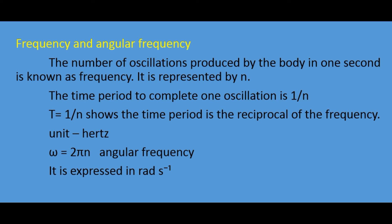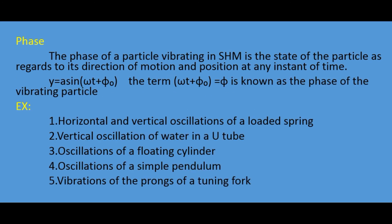Frequency is the number of oscillations produced by the body in one second, denoted by n. The time period to complete one oscillation is T equals one over n, so time period is the reciprocal of frequency. The unit of frequency is Hertz. The angular frequency omega equals 2 pi n, and is expressed in radians per second.